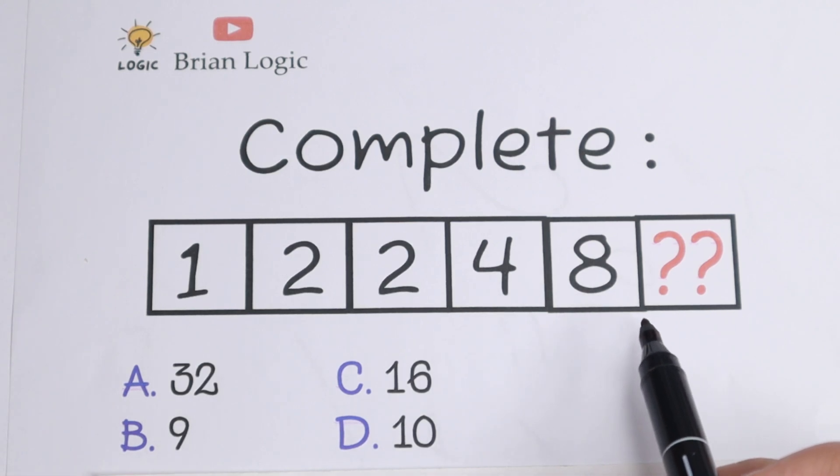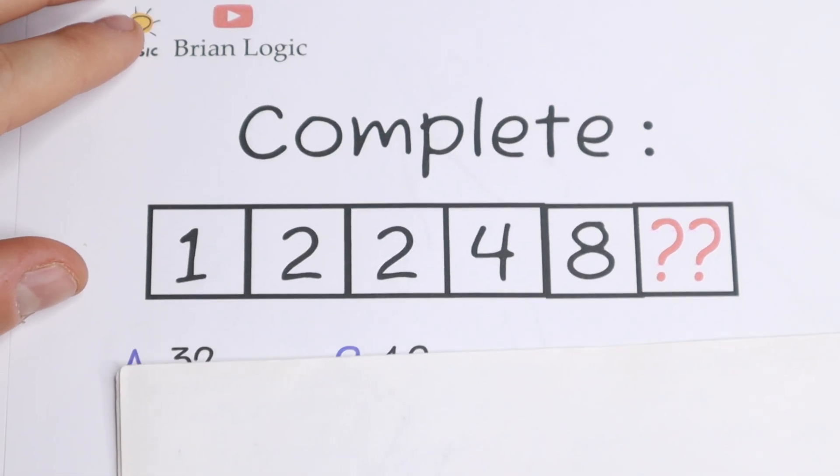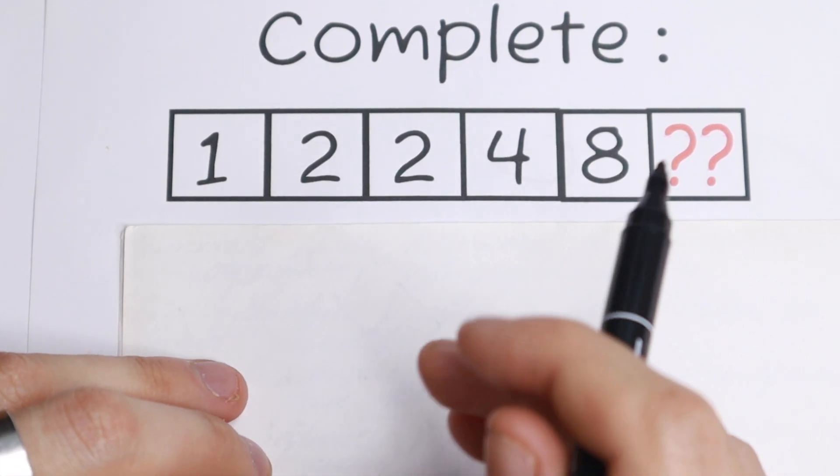What's the pattern between all of these numbers? As you can see, we have 1, 2, 2, 4, and 8. I want to start with this approach.